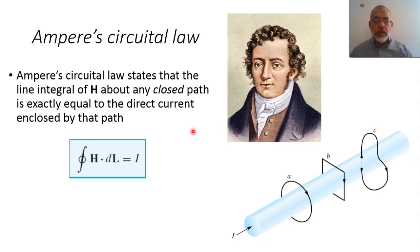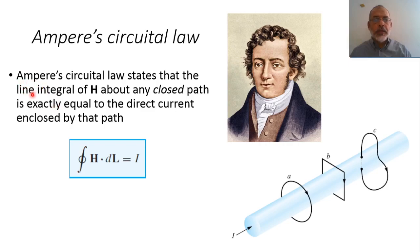Ampere's law. Ampere introduced another law for the magnetic field, but in this case he starts from the magnetic field to find the current. In Biot-Savart law, Biot-Savart starts from the current to find the magnetic field, but in the case of Ampere, Ampere starts from the magnetic field. Ampere's law states that the line integral of the magnetic field about any closed path is exactly equal to the direct current enclosed by the path.